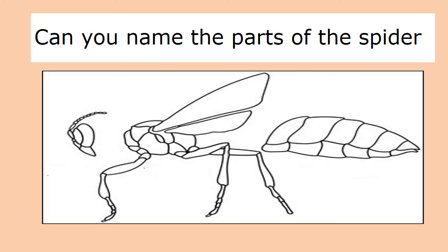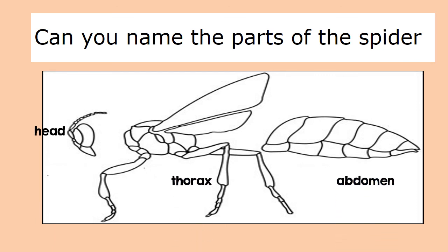Can you name the body parts or segments of the insect? Pause the video. We have the head, we have the thorax, and we have the abdomen, so there are three body segments.